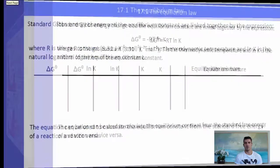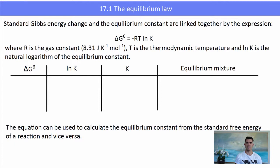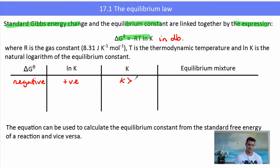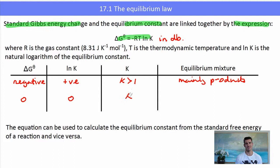To formalize it: delta G equals negative R times the Kelvin temperature times the natural log of the equilibrium constant, and this can be found in the data book. If delta G is negative, then ln K will be a positive value, K will be greater than 1, and the mixture will contain mostly products. If delta G is zero, then ln K will be zero, K will equal 1, and there are equal amounts of reactants and products — it is in exact equilibrium.